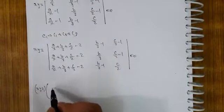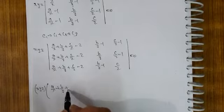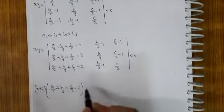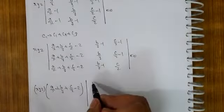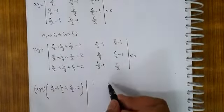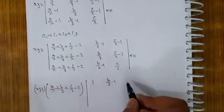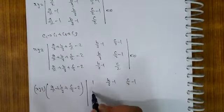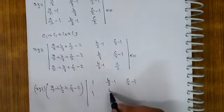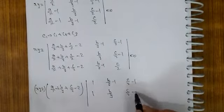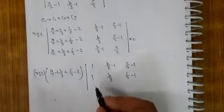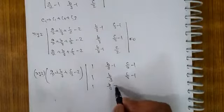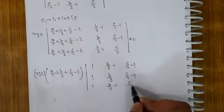अब यहाँ से क्या करें — यह common ले जाते हैं X, Y, Z। A upon X plus B upon Y plus C upon Z minus 2, बचता क्या है: 1, B upon Y minus 1, C upon Z, 1, B upon Y, 1, B upon Y minus 1, and C upon Z.